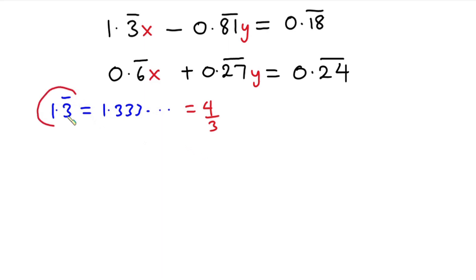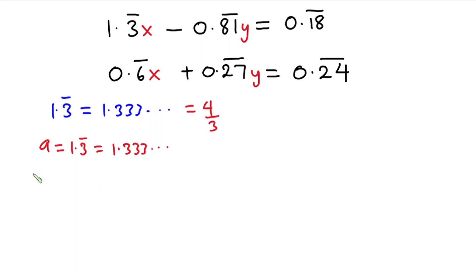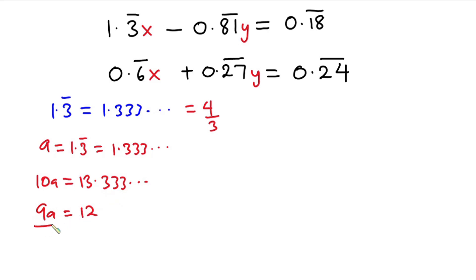Now what if a calculator is not allowed? One way to do this without a calculator is to let a variable — in this case a — equal 1.3̄, which is 1.333... If we multiply this equation by 10, we get 10a = 13.333... Subtracting the first equation from the second gives 9a = 12. Dividing each side by 9, a = 12/9 = 4/3.